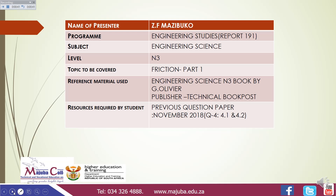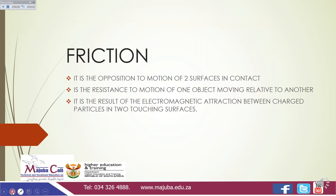Let's start by defining friction. Friction is the opposition to motion of two surfaces in contact. It is also the resistance to motion of one object moving relative to another, and it is the result of the electromagnetic attraction between the charged particles in two touching surfaces.